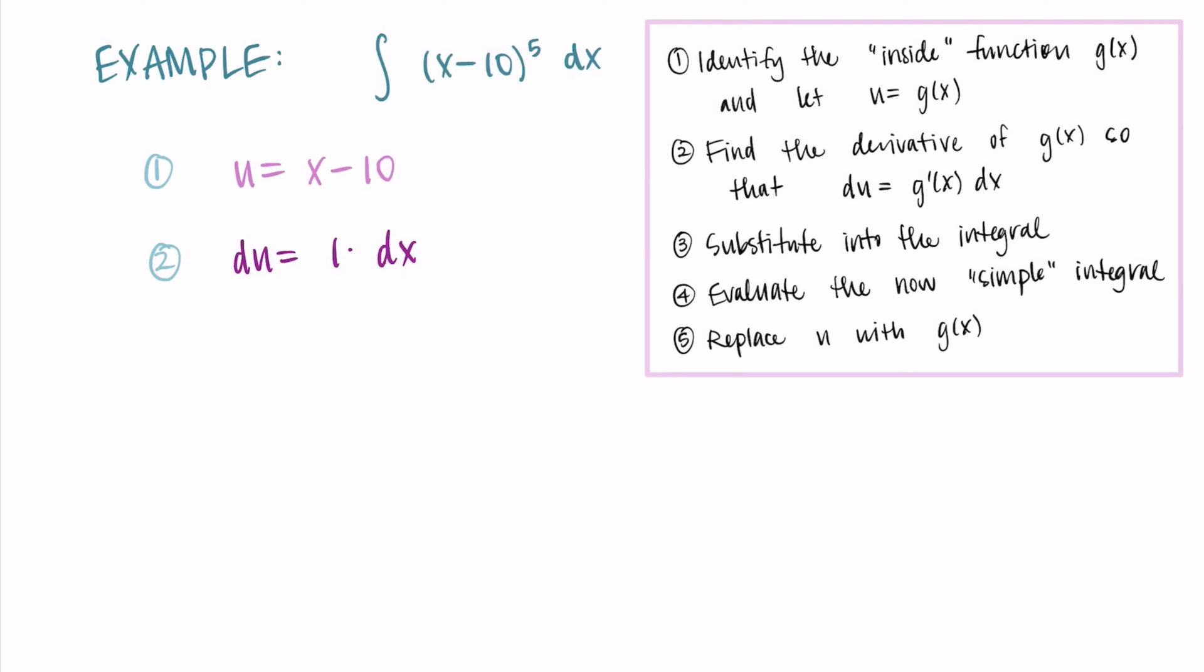Now in my integral that I started with, I want to replace everything with my u's and my du. So x-10 is u, and the dx is just du. So I'm getting that I'm doing the integral of u^5 du.